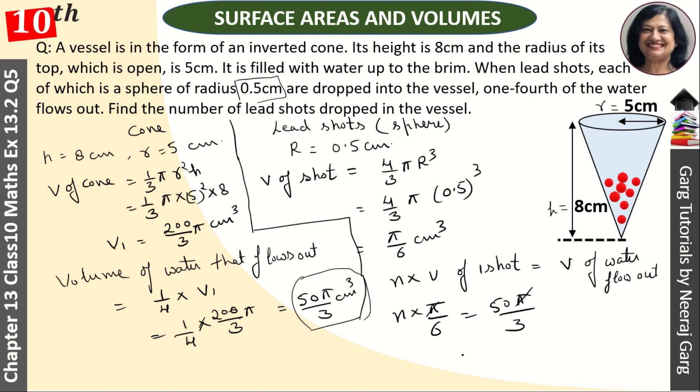And this pi is cancelled. So n equals 50 by 3 into 6, which gives us n equals 100. So this is the number of shots, which is equal to 100.